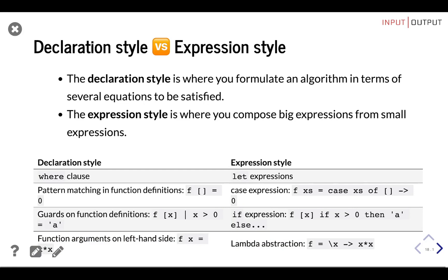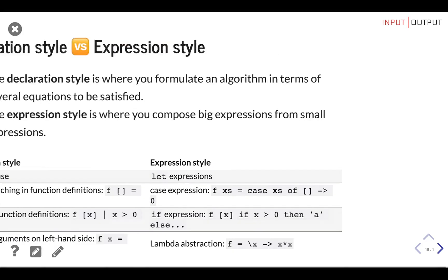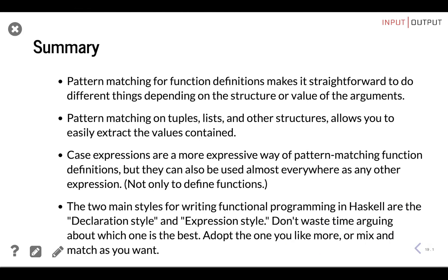As a summary: pattern matching in function definitions makes it straightforward to do different things depending on the structure or value of arguments. Pattern matching on tuples, lists, and other structures allows you to easily extract values. Case expressions are a more expressive way of pattern matching that can also be used almost anywhere as any other expression. The two main styles for writing functional programs in Haskell are the declaration style and the expression style — don't waste time arguing about which one is best; adopt the one you like or mix and match as you want. Make sure to do the homework and see you in the next one.